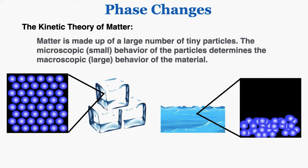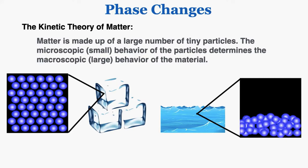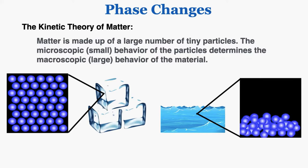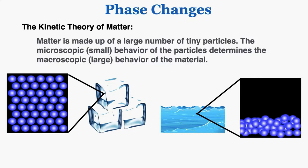The theory says that matter is made up of a large number of tiny particles, and the microscopic small behavior of the particles determines the macroscopic large behavior of the material. What we're looking at in this lecture is how the same material, like H2O, can exist in different states like a solid, a liquid, or a gas, and what it really means for it to exist in those different states.